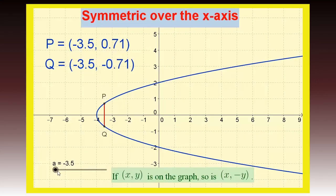Next, we have a graph that is symmetric over the x-axis. You can see the two branches, and the x-axis acts as an axis of symmetry. The definition of symmetric over the x-axis is that if you have a point x comma y on the graph, then so is the point x comma negative y. In other words, we use the same x coordinate, but the y's are opposite.